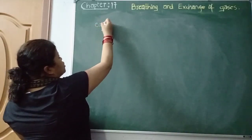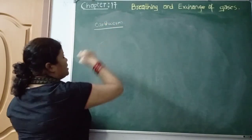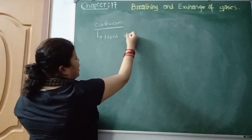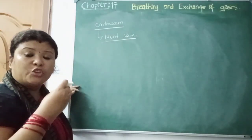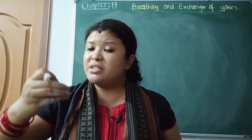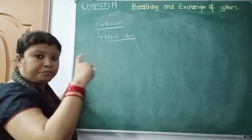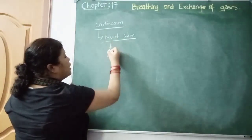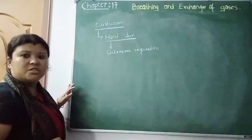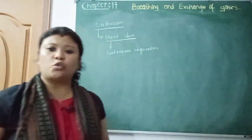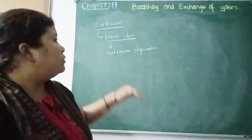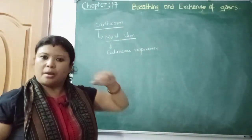Now let us come to earthworm. Earthworms carry out respiration through the moist skin. The earthworm has mucus around its skin, which keeps the skin moist. With the help of this moist skin, the earthworm is able to carry out respiration. Whenever respiration is carried out through the skin, it is called cutaneous respiration.